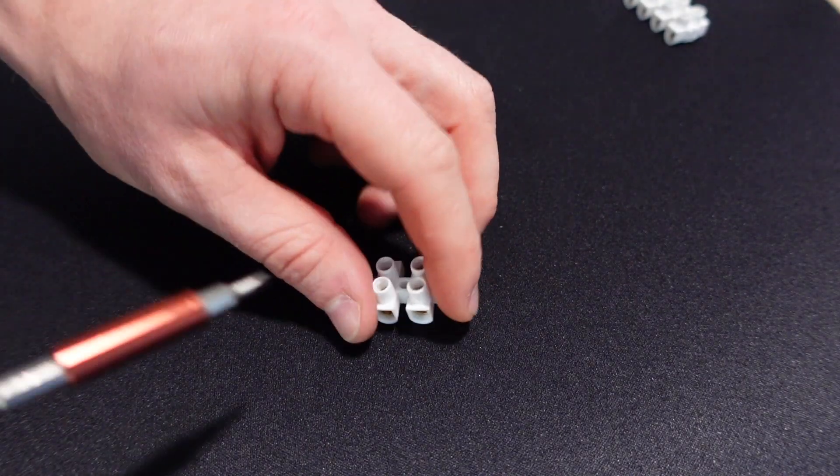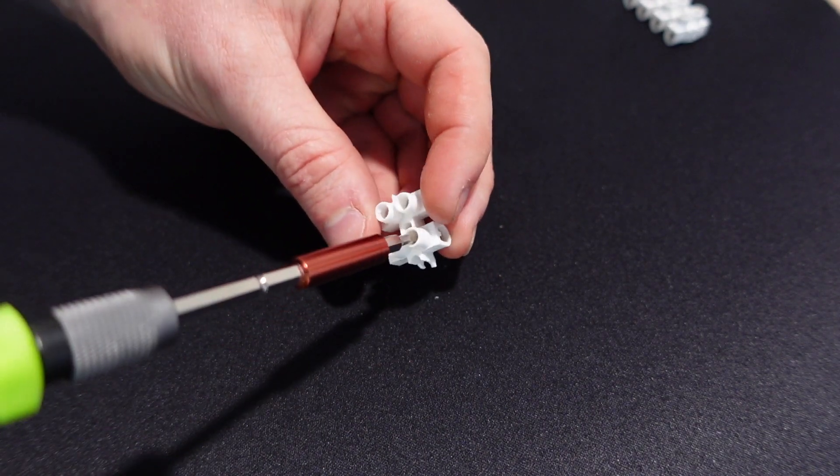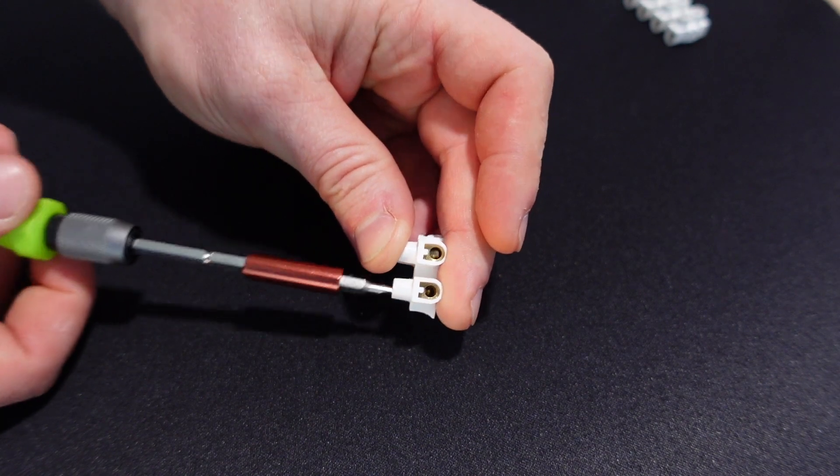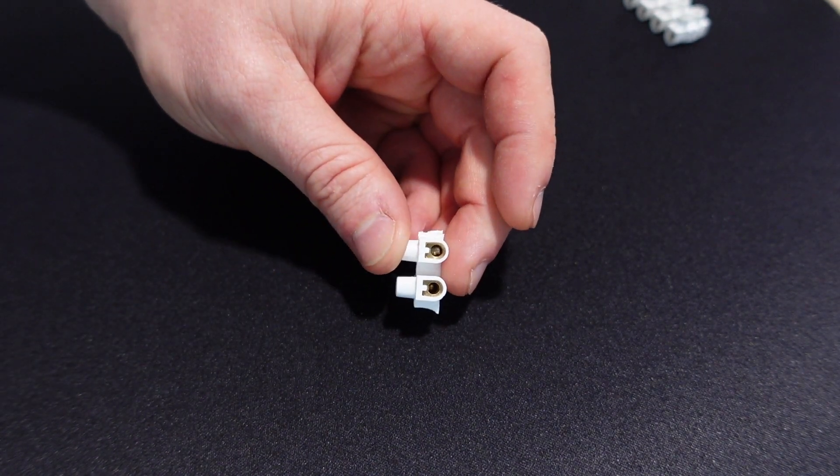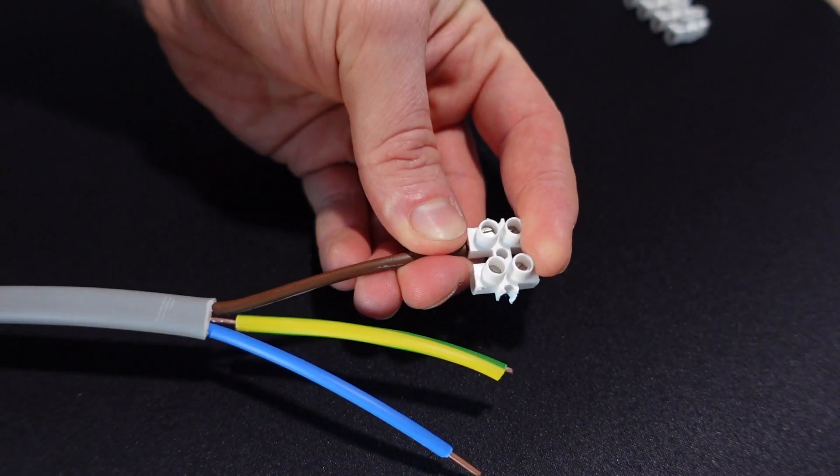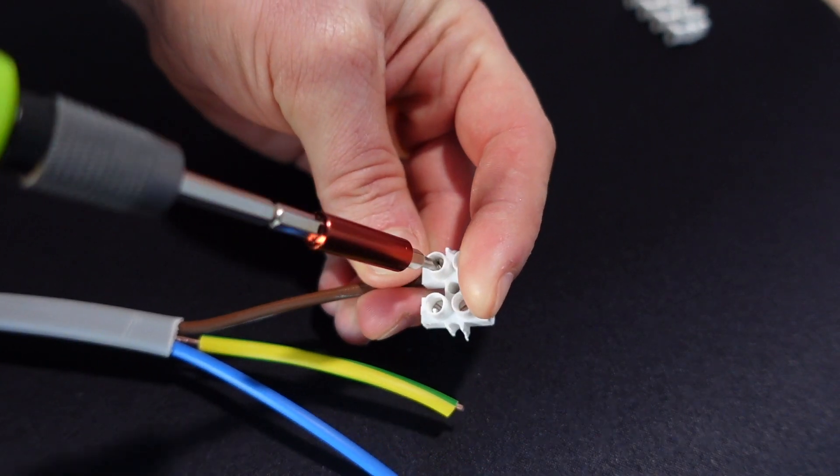These can actually be snapped off like so. They're very easy to use. All you need to do is grab a screwdriver, undo the little screw and you'll see inside how they work. You undo that screw, you'll put your wire inside the terminal strip and do up the screw again.